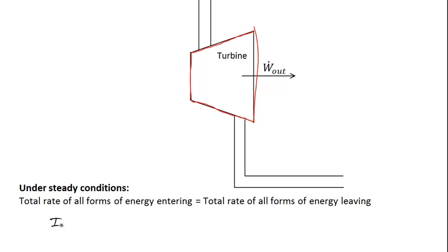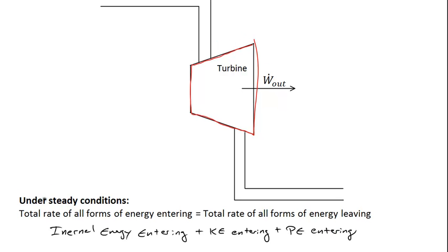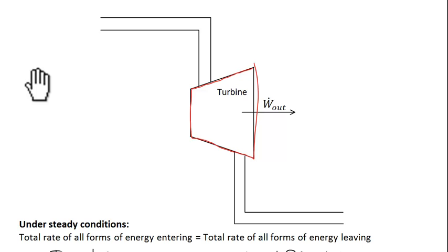There's various ways energy can get into the turbine. We can have internal energy entering, there can be kinetic energy of the fluid entering, and potential energy of the fluid entering. One form of energy that's easy to forget, and it's not terribly intuitive, is known as flow energy, or flow work.